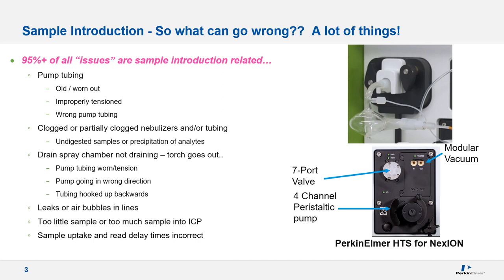Other common issues are having leaks or air bubbles in the lines that cause signal instability and spiking, delivering too much or too little sample to the plasma, or having your sample uptake and re-delay time set incorrectly so you start acquiring data before the sample is even in the plasma or before the signal is stabilized. Most of us don't even notice we have a problem until a QC check sample in an analysis fails. The key is to always start troubleshooting at the sample introduction system.